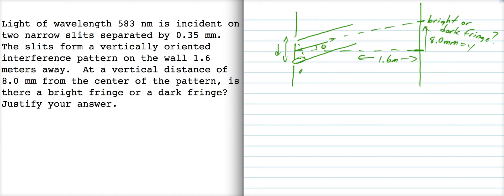Now this path difference here, delta, is d sine theta. So that's two-slit interference.